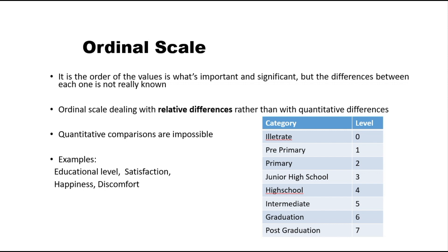For example, ranks in a class — if student A holds first position, student B holds second, and student C holds third, these positions are ranks. If we don't have absolute numbers and are dealing only with ranks, we can simply say that the first rank holder scored highest in the class, but we cannot quantify the difference between marks because we don't have the absolute data. So ranking is an example of ordinal scale.